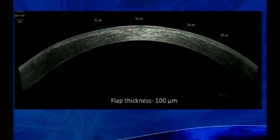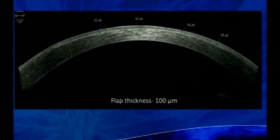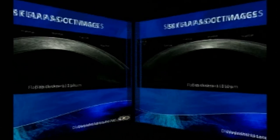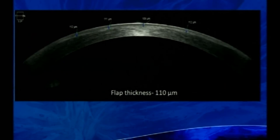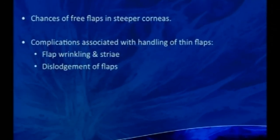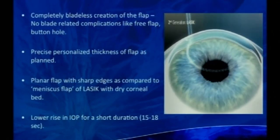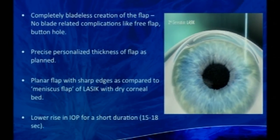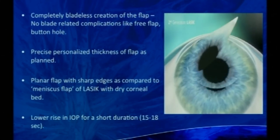AS-OCT imaging shows consistent SBK flaps of 100–102 microns with a 90-micron blade; with a 100-micron blade, variation is only 6–12 microns. Most cases yield a predictable planar flap. Potential complications include free flaps in steeper corneas, and thin flap handling issues such as wrinkling, striae, and dislodgement — though rare. Femto-LASIK advantages: completely bladeless, precise personalized flap thickness, planar flap with sharp edges, dry corneal bed, and lower IOP rise for just 15–18 seconds.